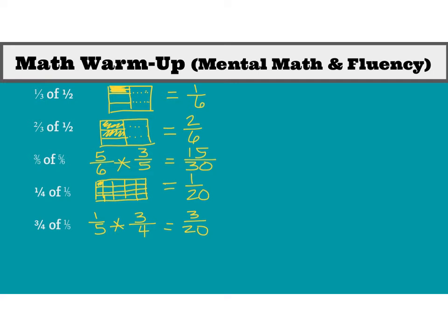For the math message today, we're going to look at three problems. Number one: a six-meter rope is cut into three equal pieces — how long is each piece? Number two: a one-meter rope is cut into three equal pieces — how long is each piece? Number three: a half-meter rope is cut into three equal pieces — how long is each piece? Complete all three, write a number model, and think about which part is the divisor, quotient, and dividend. Pause your video, then come back and check.